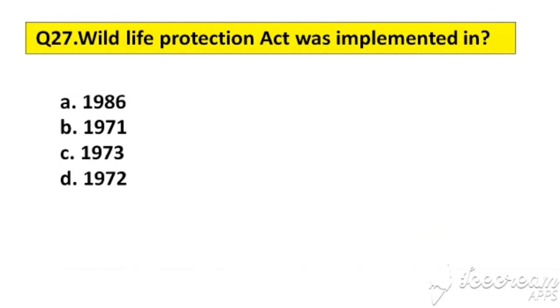Question number 27. Wild Life Protection Act was implemented in which year? Option A: 1986. B: 1971. C: 1973. D: 1972.